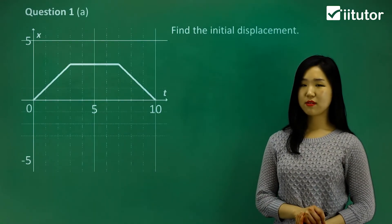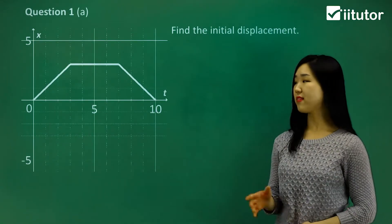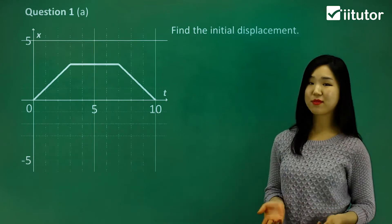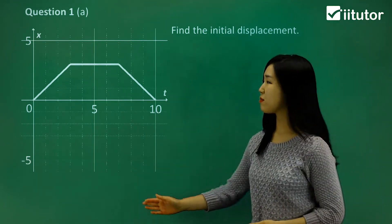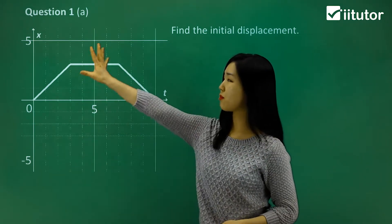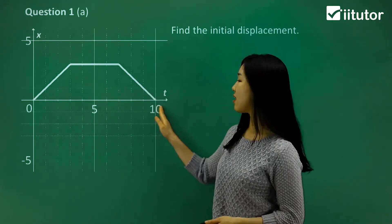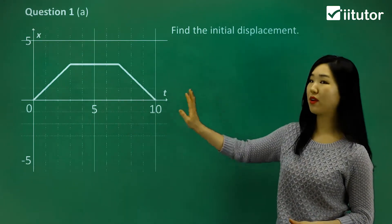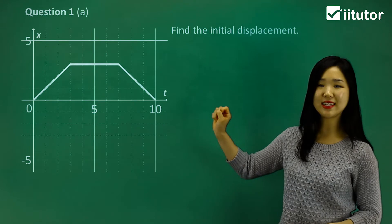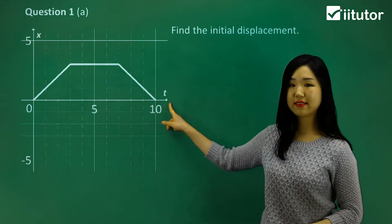We're going to be looking at displacement-time graphs. This is an example of a displacement-time graph. Displacement is more like a position, where we call it x. You can see this x-axis. We're not going to call it x anymore — we're going to call it t. So that's the x-axis and this is the t-axis.